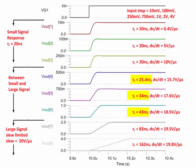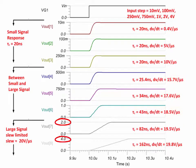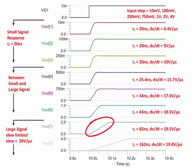However, the amplifier is not yet at the full slew rate of 20 volts per microsecond. For input steps greater than 1 volt, the amplifier is slew rate limited. You can see that the rate of change of the output signal is at the slew rate limit of about 20 volts per microsecond. Also notice that the output signal increases linearly in response to the input step.